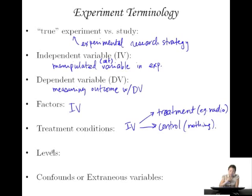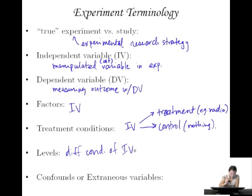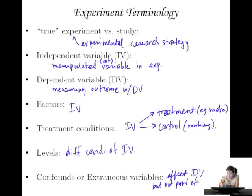Levels of an IV is the same thing as treatment conditions. So in this IV we have two levels — this level and that level. It's another way of saying different conditions of an IV. And confounds or extraneous variables are those variables that you don't necessarily measure but that affect your DV. They affect the DV but they're not part of your study design. Those are what we call confounds or extraneous variables.